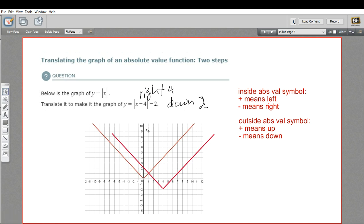Now that should be the correct translation, but let's check it. Let's look at the vertex. The vertex is now at the point four, negative two.